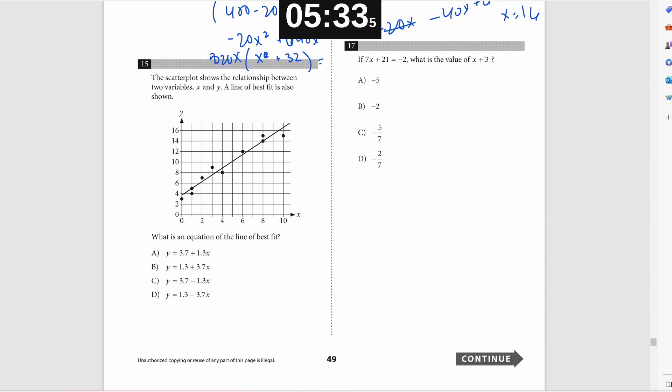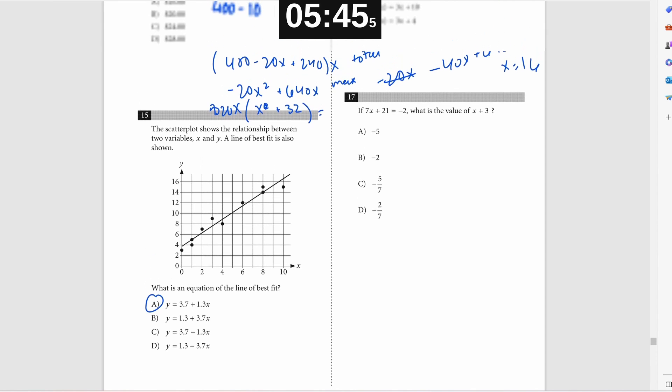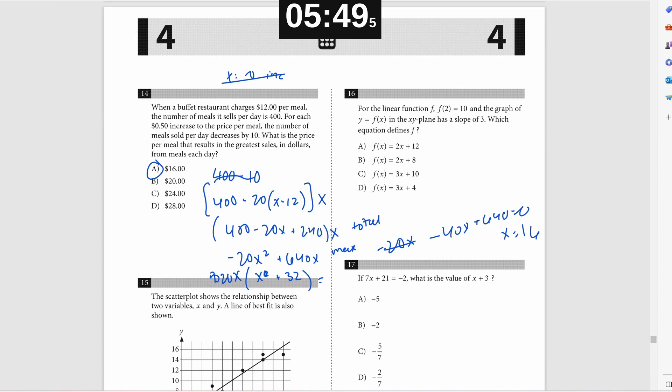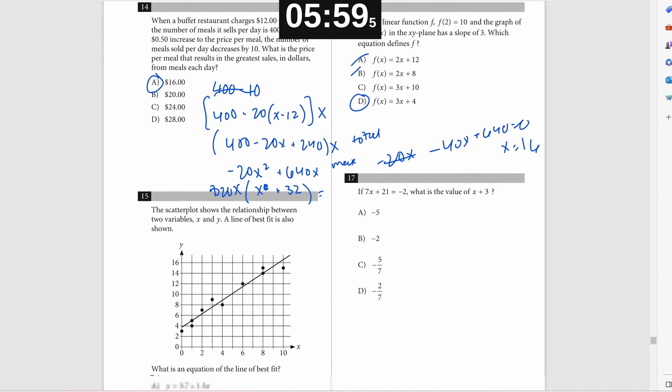Anyways, problem number 15, you don't need calculus for the SAT. Don't worry about that. Problem number 15, very easy in comparison. You just look at the Y intercept. It's 3.7 and then the slope is positive. So it's going to be answer choice A. Problem number 16, you're told the slope is three. So that's going to rule out A and B because those have a slope of two. And then you just think, okay, if you plug in two into D, you'll get 10 as your F of X. So there you go.